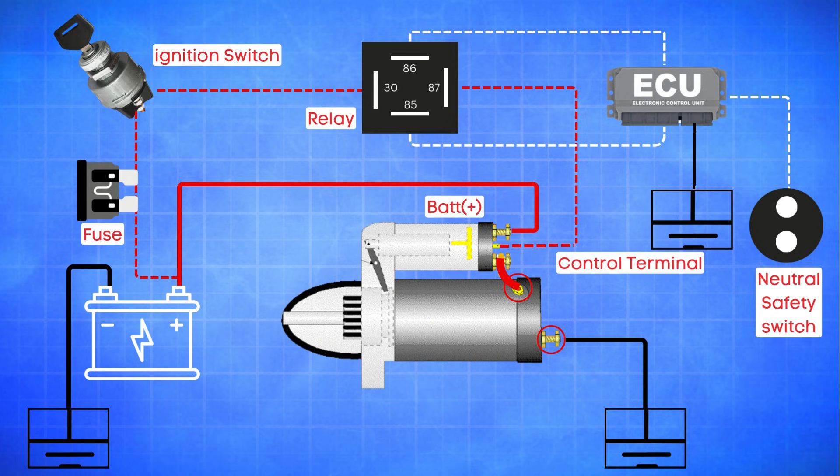Next up is the ignition switch, the place where it all begins. When you turn the key to the start position, the ignition switch sends an electrical signal to the starter relay coil. This signal activates the relay, causing it to close its primary contact.